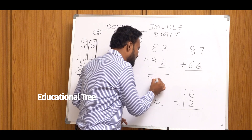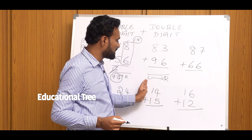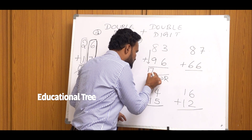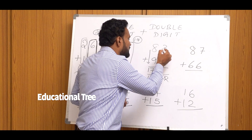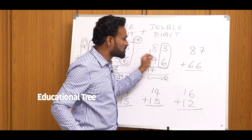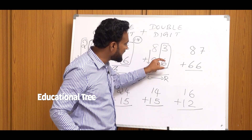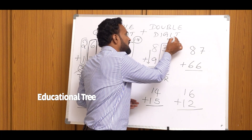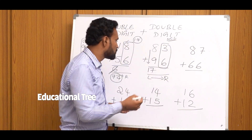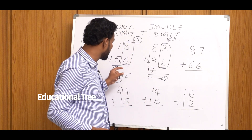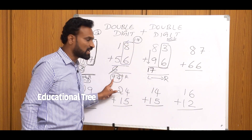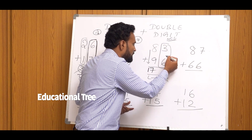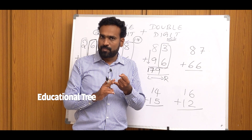Let's do one more problem, working left to right. The sum of 8 and 9 is 17. Next place: check carry or non-carry. 3 plus 6 is 9, which is less than 10 — so it is a Non-Carry Combination. For non-carry, we answer directly: 3 plus 6 is 9.